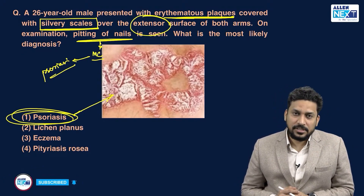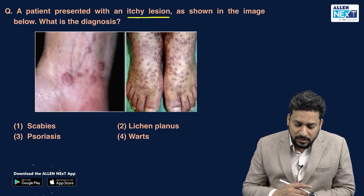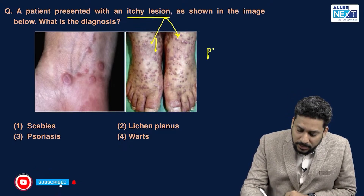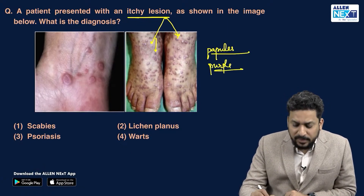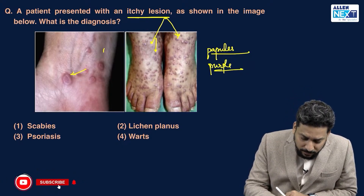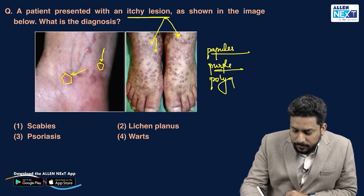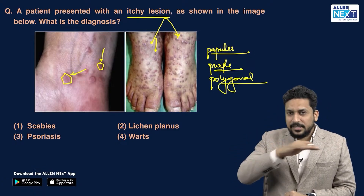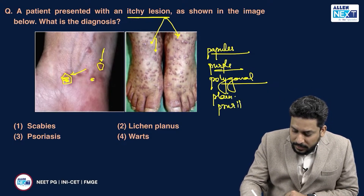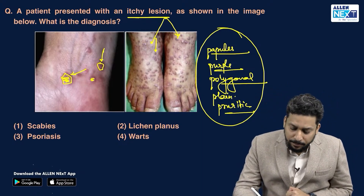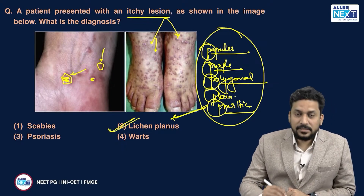The likely diagnosis is psoriasis — erythematous plaques with silvery white scaling. Then a patient presented with itchy lesions. If you see them closely, they are very small papular lesions. The color is slightly violaceous or purple. They are very small papules, slightly polygonal in shape — not exactly round. The lesions are flat-topped, not elevated, and are very pruritic. So all the P's are present: flat-topped, purple, polygonal, pruritic papules — all pointing towards lichen planus.